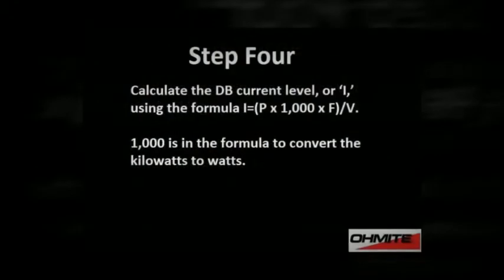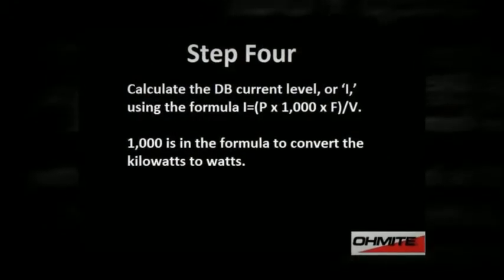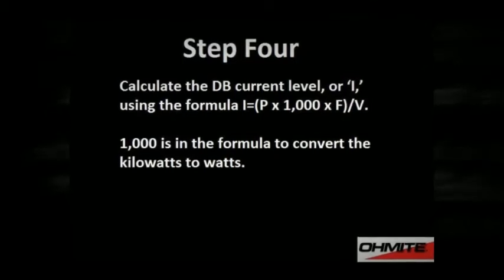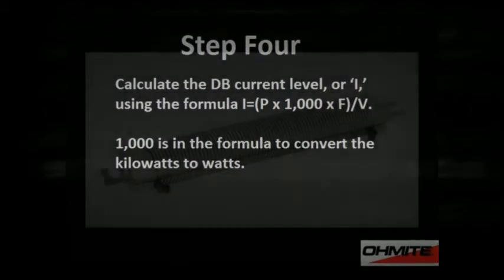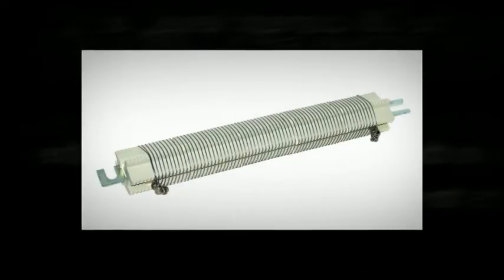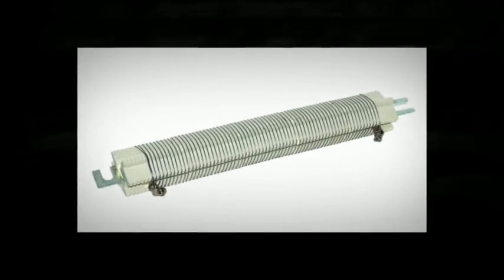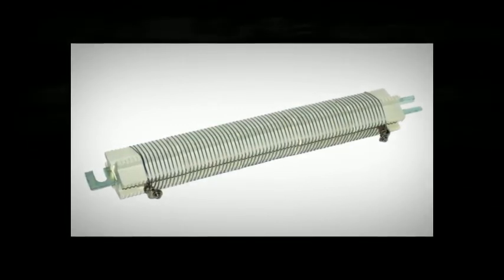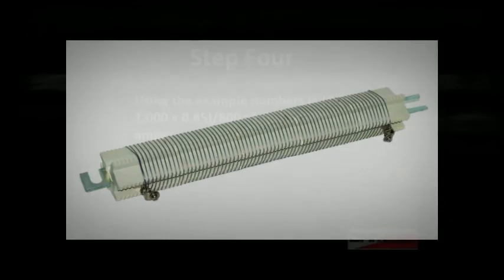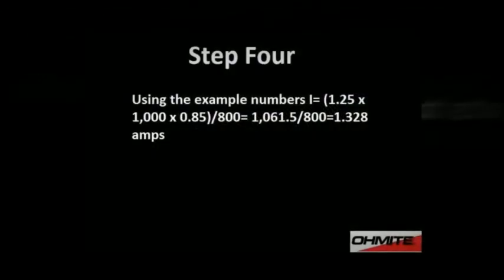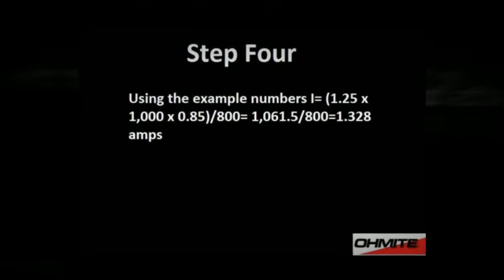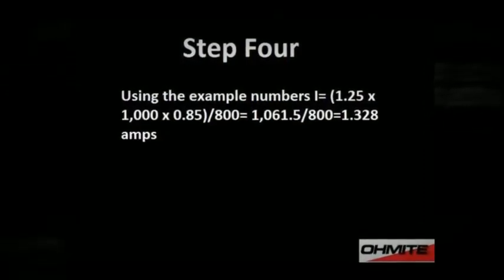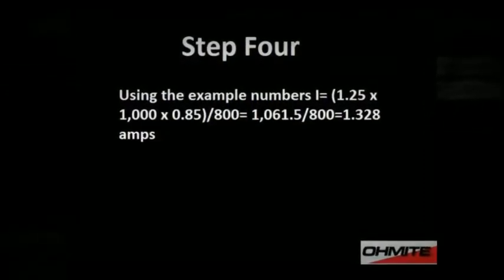Then, calculate the dB current level, or I, using the formula: I equals P times 1,000 times F, divided by V. The number 1,000 is in the formula to convert kilowatts to watts. Using the example numbers, I equals 1.25 times 1,000 times 0.85, divided by 800, equals 1,061.5 divided by 800, equals 1.328 amps.